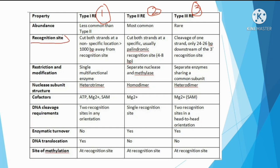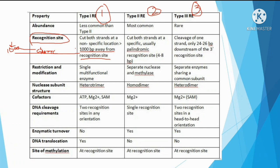Type I restriction enzymes cut at a non-specific location, approximately 1000 base pairs away from the recognition site on both strands. The cleavage position is far from the recognition site. Type II restriction enzymes cut at or within the recognition site, usually at a palindromic recognition sequence. Type III restriction enzymes cut 24 to 26 base pairs downstream of the 3' recognition site.